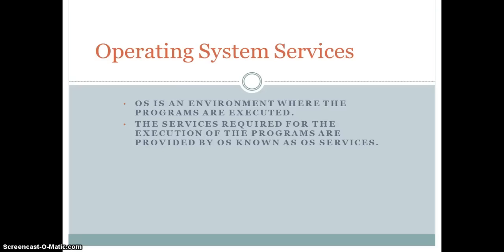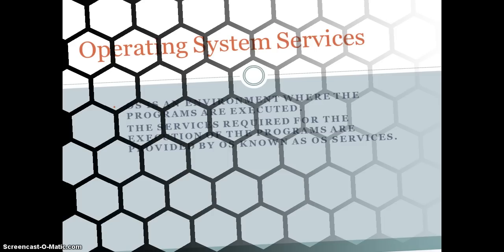To remind you what an operating system is: an operating system is a kind of environment where programs are executed. Whenever a program is executed, it requests the operating system for some sort of resources, and the operating system provides those resources to the program in order to complete execution — whether the program is written in a high-level language or a middle-level language such as assembly language.